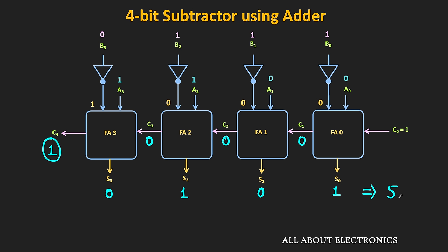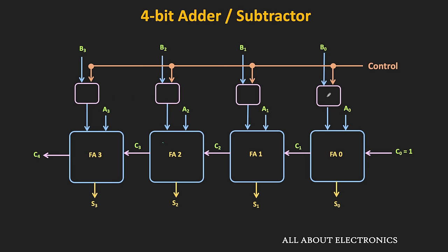Now let us modify this circuit a little so that we can perform both addition and subtraction using the same circuit. For that, we require a control circuit. Whenever we are performing addition, all the B inputs should pass as they are. But when we are performing subtraction, we should get the inverted outputs. This control circuit should be such that, based on the control input, it will provide either B or the complement of B.